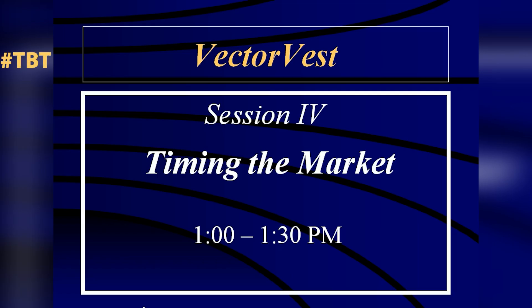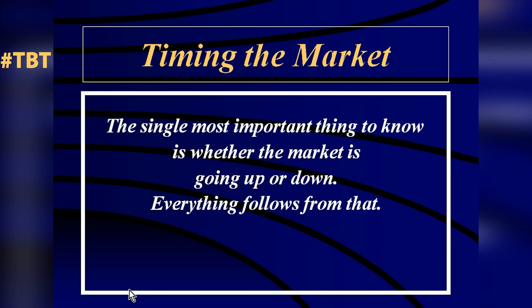We're looking at the page in your book titled 'Timing the Market.' As I said this morning, the single most important thing to know is whether the market is going up or down — everything follows from that. If you don't know what the market's doing, it's like driving at night with your eyes closed. We had so many people in the late 90s and early 2000 who made a lot of money in an easy market, bought stocks like Cisco that just went higher and higher, and when the market turned they didn't want to let go and they got hurt.